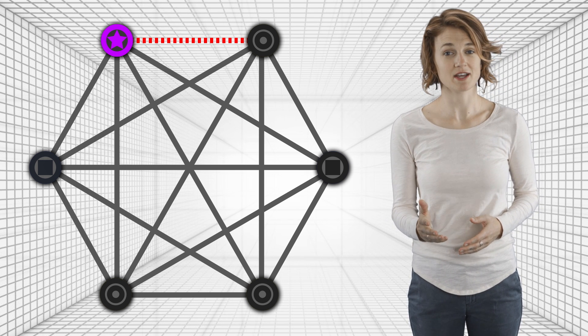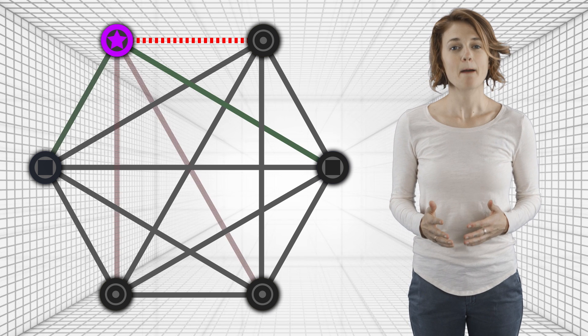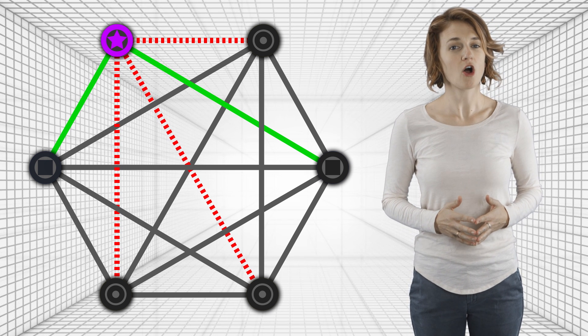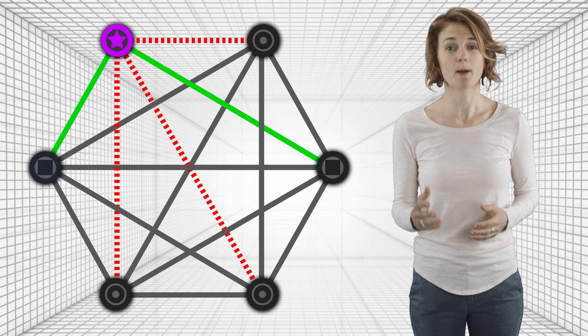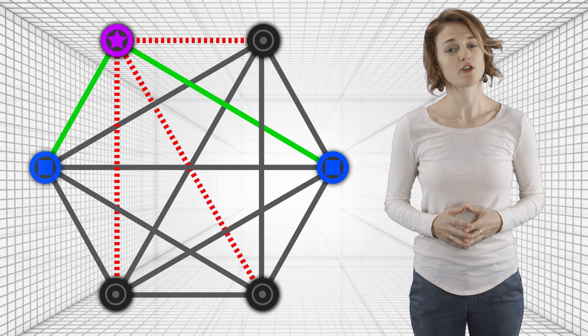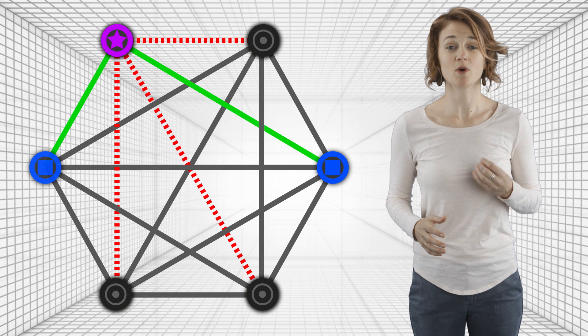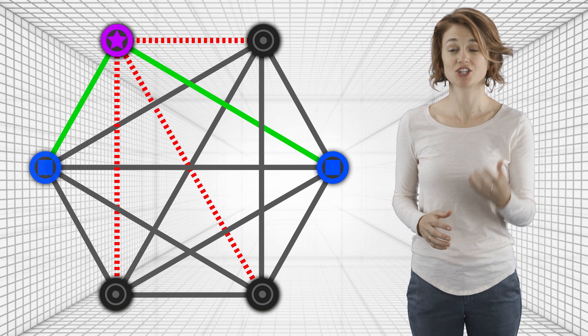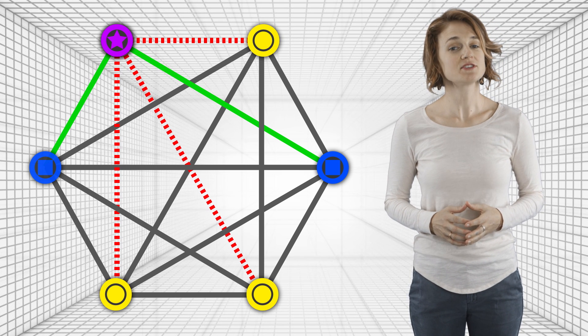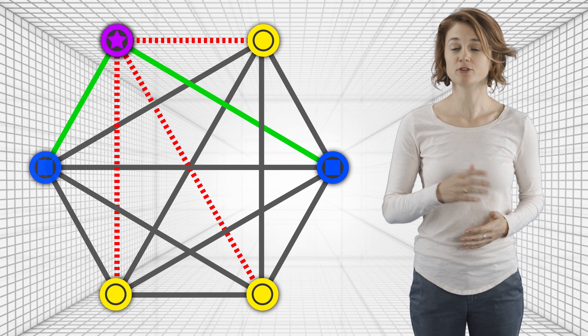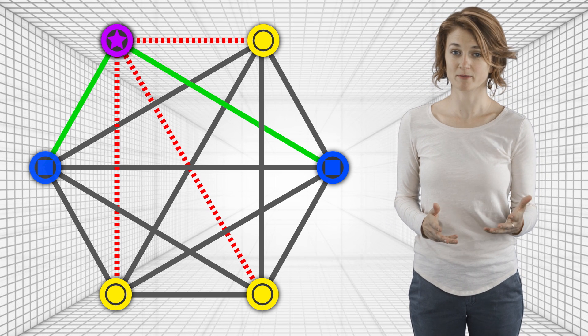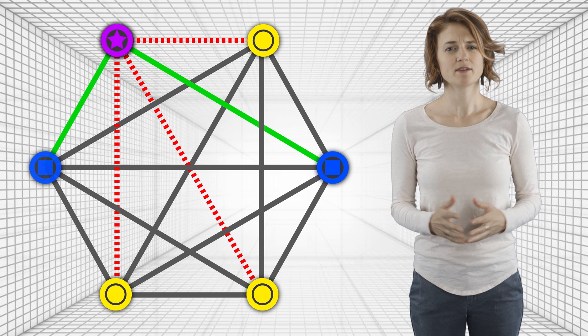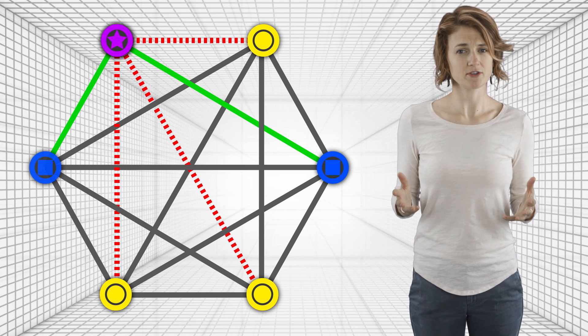The purple vertex is connected to every other vertex by either a green or red edge. Color all the purple vertex's friends, the ones it's connected to by a green edge, blue. And color all the purple vertex's enemies, the one it's connected to by a red edge, yellow. These are the two rival groups. The blue vertices plus the purple one form a group, and the yellow vertices form a group. How do we know everyone is friends with the other members of their group?